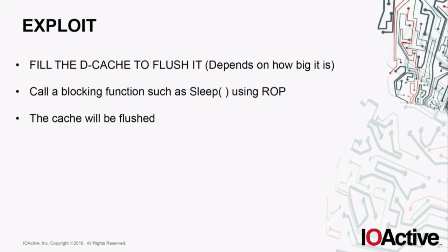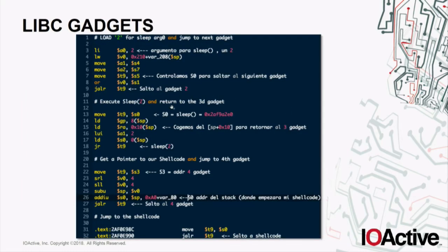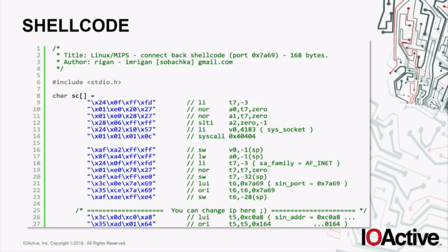For the ROP exploit, from the epilogue of the function containing the stack overflow we know which registers we control — very useful for ROP. These are the gadgets I'm using to execute sleep and then jump to the shellcode, all from the libc. For the shellcode, I'm using a standard reverse shellcode. There are several MIPS shellcodes for Linux on the internet, even MetaSploit provides MIPS shellcodes, and this particular one is from Exploit-DB. But none of these are going to work in this system.